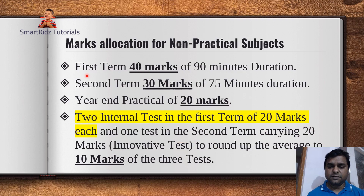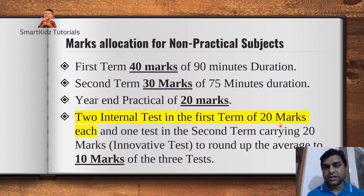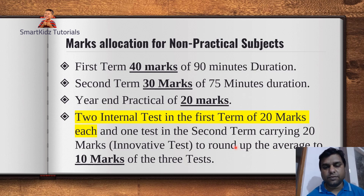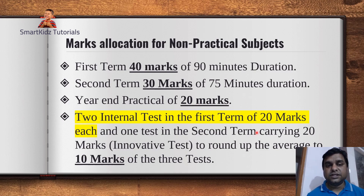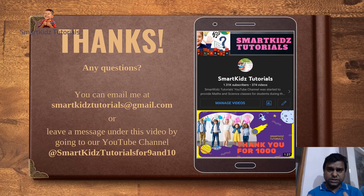To summarize Science: first term was 40 marks with a 90-minute duration; second term was 30 marks with increased timing; practical exam was 20 marks held at your own school; and two internal tests from August and October plus assignment or project work give an average out of 10 marks. So 40 plus 30 plus 20 plus 10 equals 100. That is how your final marks are calculated for Science.